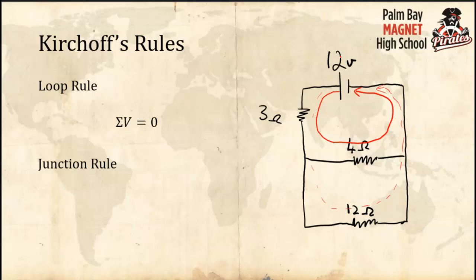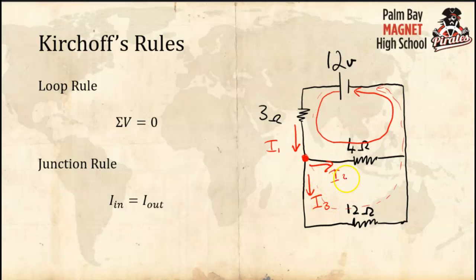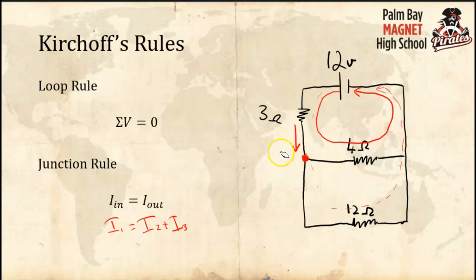The second rule is called the junction rule. The junction rule basically states that whatever current comes into a junction has to equal the current coming out of the junction. If there is a current I1 flowing into a junction, then I1 has to equal I2 plus I3. Otherwise you're losing or gaining charge — electrons can't just appear or disappear. The current in amps flowing in has to equal the total current flowing out.